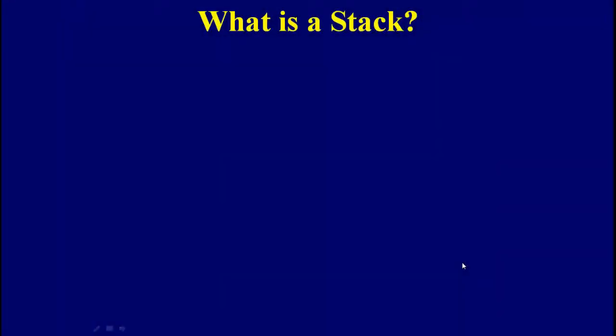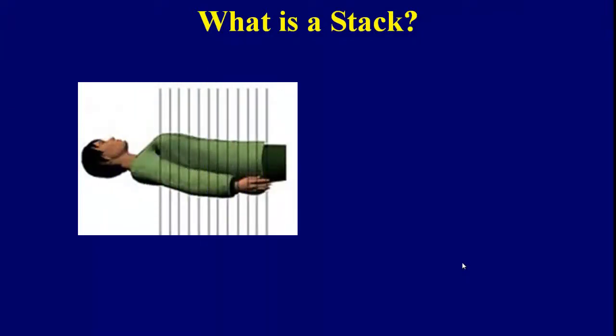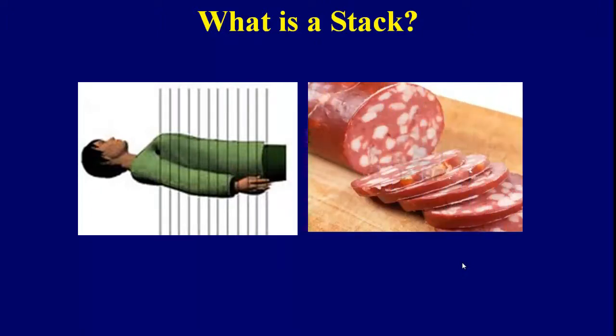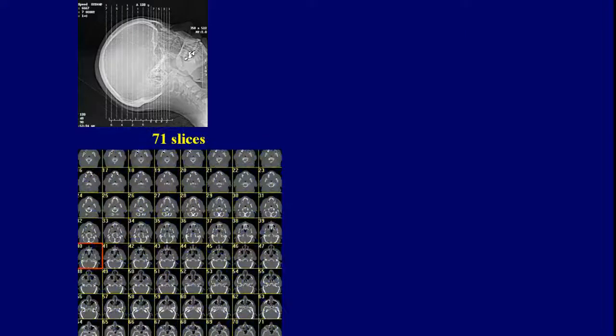What is a stack? A scanner takes a series of pictures as it slices through the body, much like cutting slices through a sausage. Here's a picture showing the location of different slices through the head of a patient. The result of this scan would result in 71 slices, all of which are displayed in this panel.